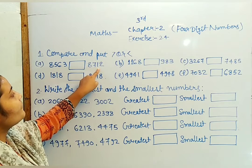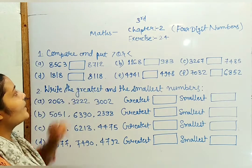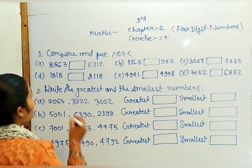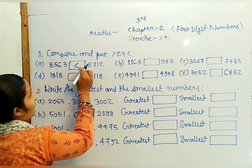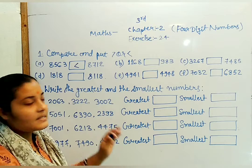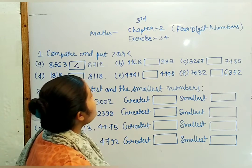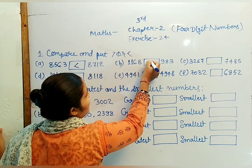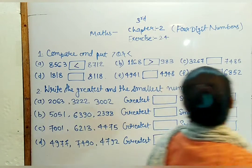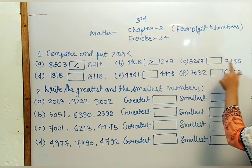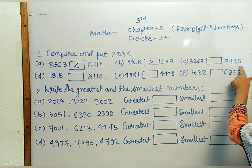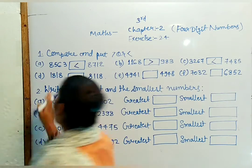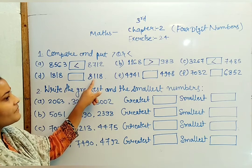The first class is greater than second. So our second number is greater, 8,712. So 8,563 is less than 8,712. Next, 1,168 and 1,983. Then 3,267 and 7,485. Here we go, 1,818 and 8,118.